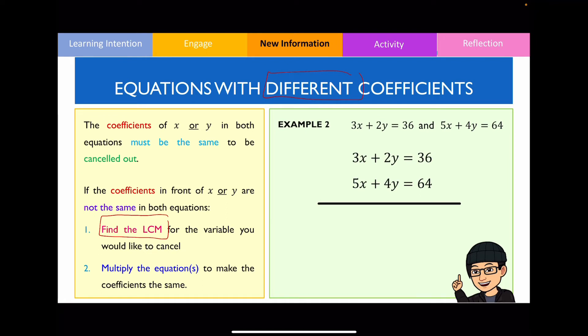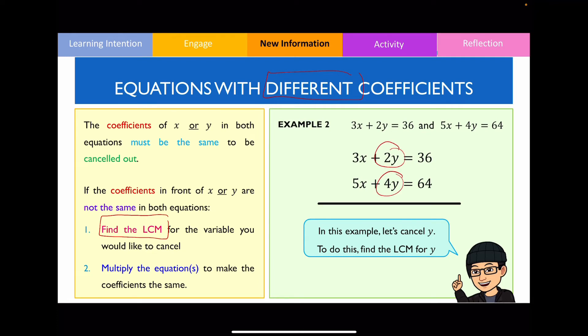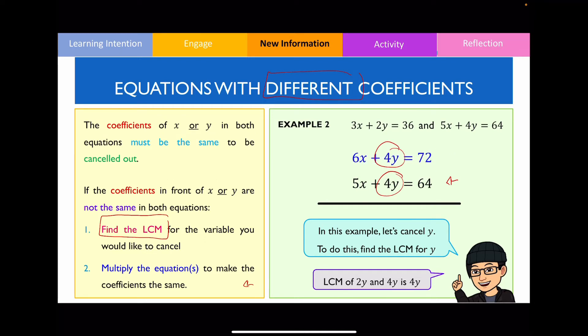Now that the equations are set up, let's decide whether to cancel x or y. In this example, let's cancel y. To cancel y, we first find the lowest common multiple of the y terms: the LCM of 2y and 4y equals 4y. Since the second equation already has 4y, we won't touch it. We'll multiply the first equation by 2 — multiplying everything by 2. This is what the new equation now looks like.